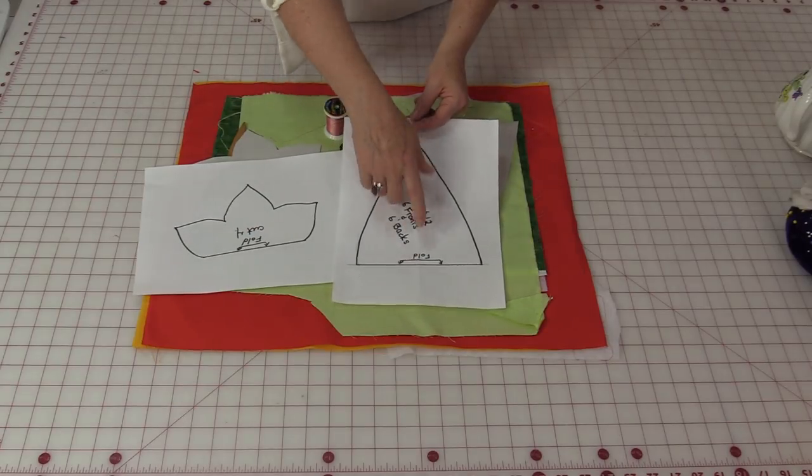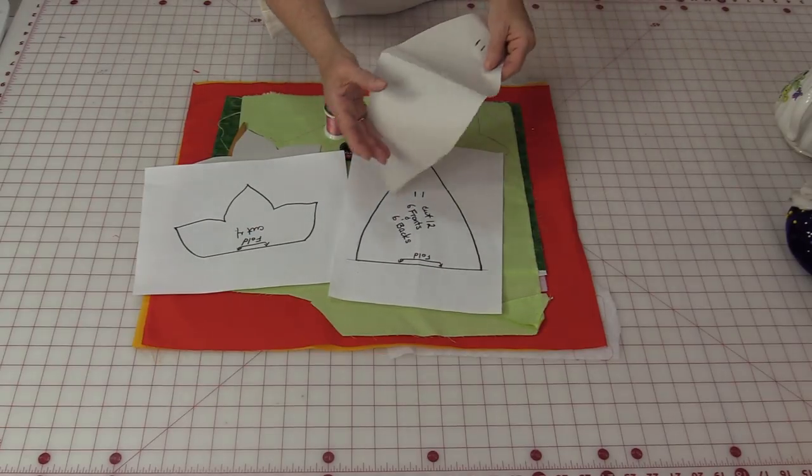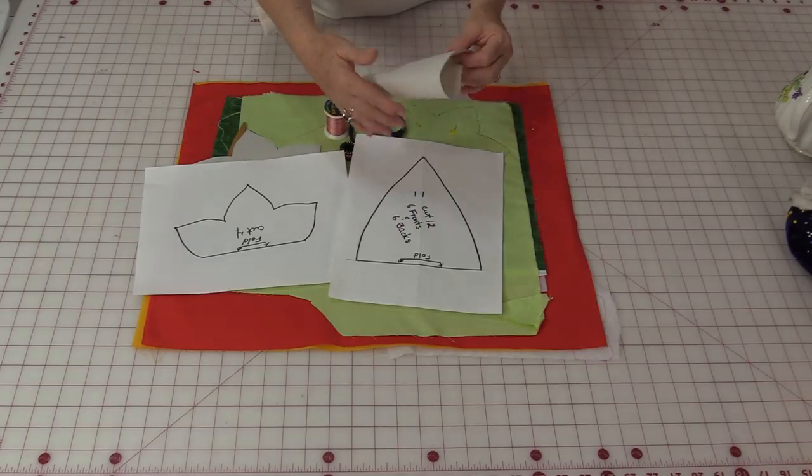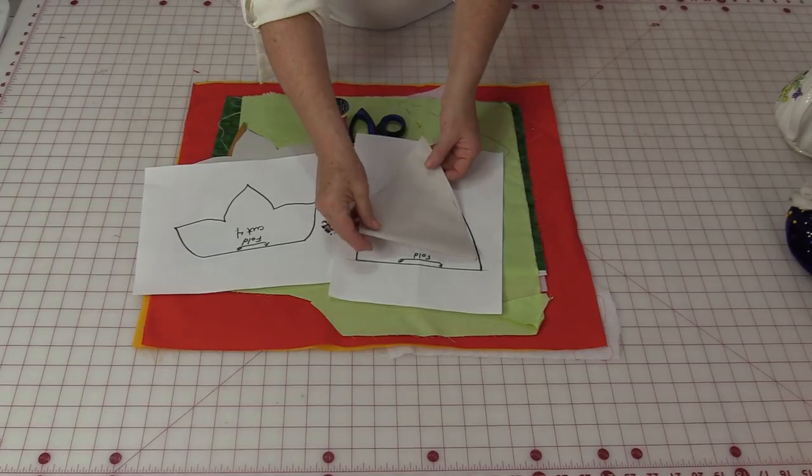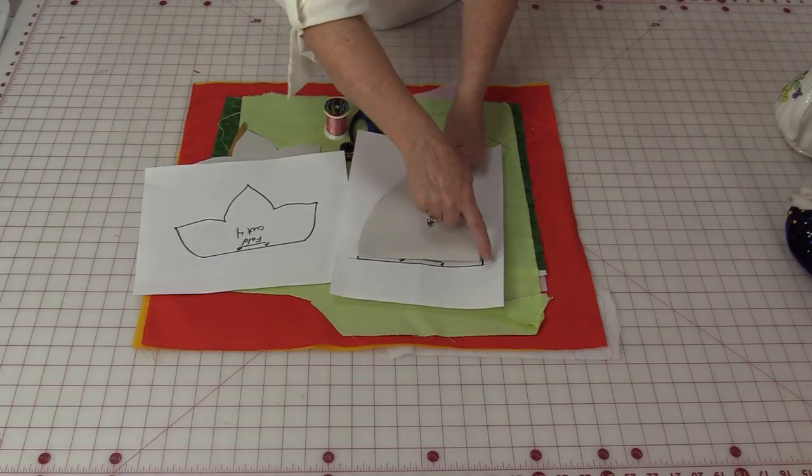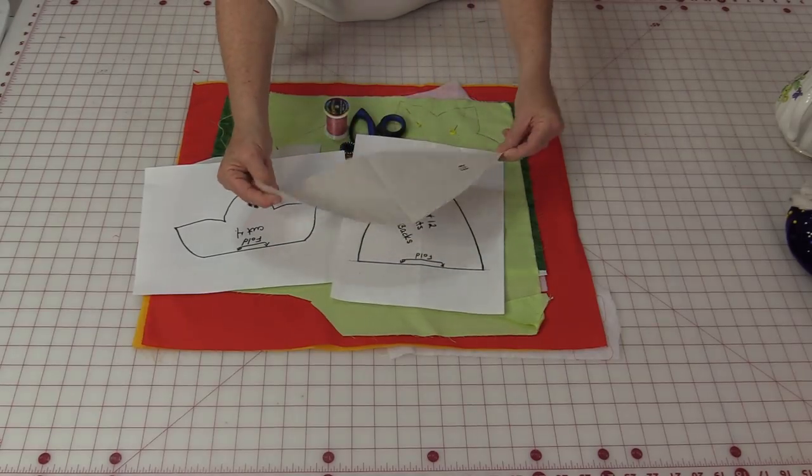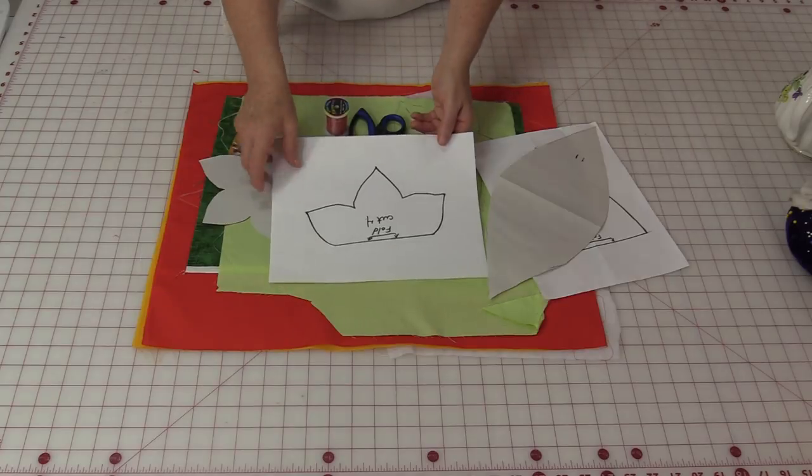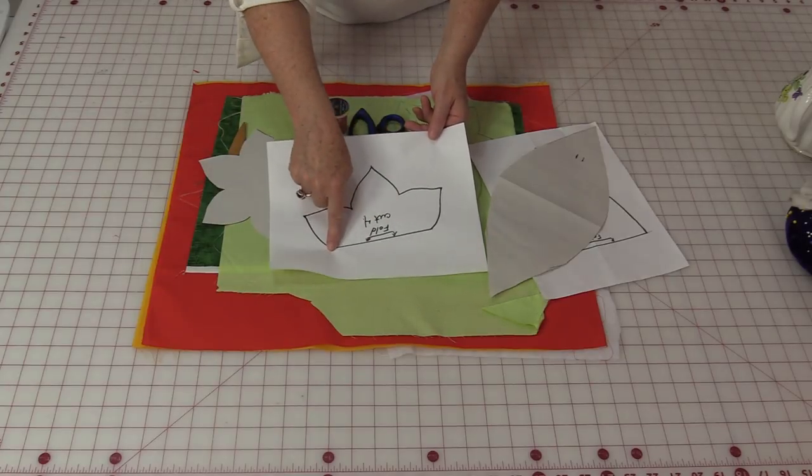For the petals you have a fold line, so you're going to need to take a nice big piece of paper, fold it in half, and on that fold line put your fold and cut out that shape. You're going to end up with a big petal.